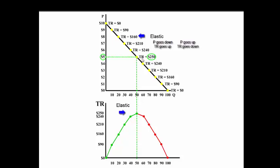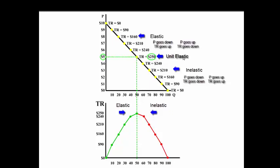And here, if you lower the price and total revenue keeps going down, then we call that inelastic. And at or around $5, where the total revenue is maximized, we call that unit elastic.